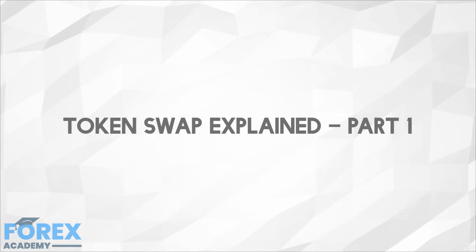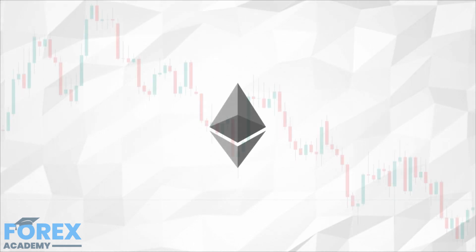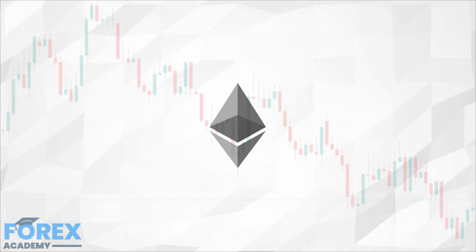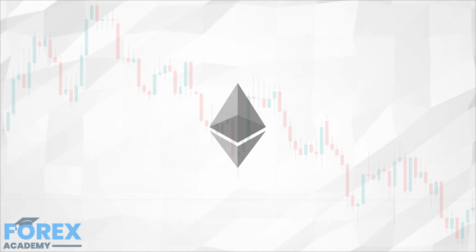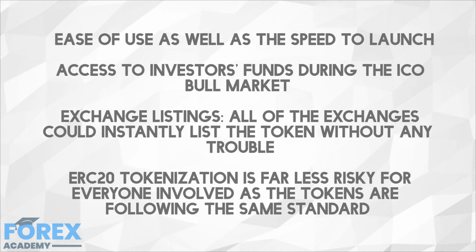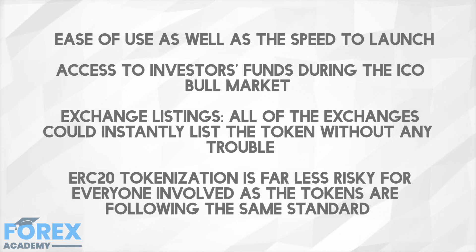Many projects launched on the Ethereum network using its ERC20 protocol in 2017 and 2018. Some of those projects subsequently scheduled token swaps into their native tokens as part of their blockchain launch. These tokens started using ERC20 for several reasons: ease of use and speed to launch, access to investor funds during the ICO bull market, exchange listings — all exchanges could instantly list the token without any trouble. ERC20 tokenization is far less risky for everyone involved, as the tokens follow the same standard.